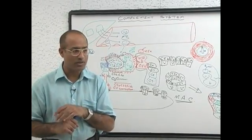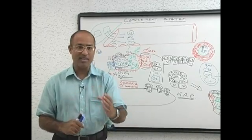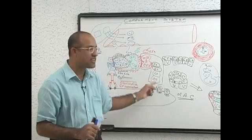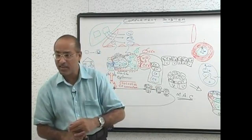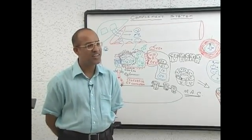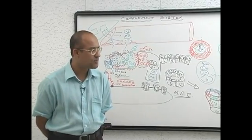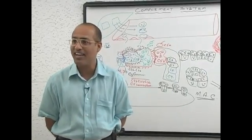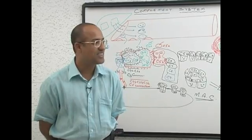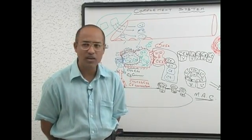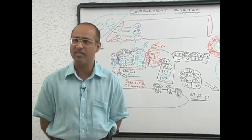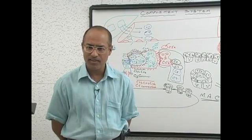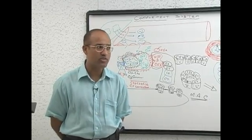Even though the activities of two individuals are the same and both are being exposed to the same bacteria, the person with terminal complement component deficiency has more chances to suffer with recurrent gram negative infections. These infections are especially gonococci — gonorrhea, a sexually transmitted bacterium — and meningococci. Gonococcal infections and meningococcal infections are especially more severe and more recurrent in patients who have deficiency of terminal complement components.